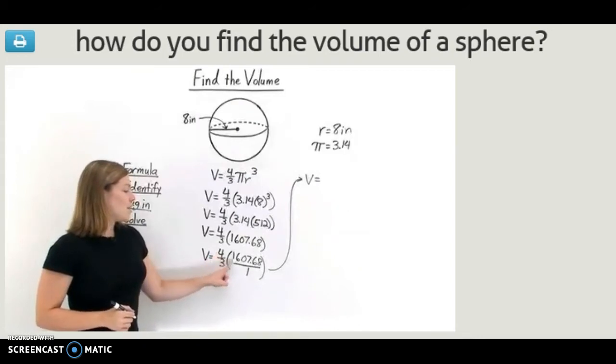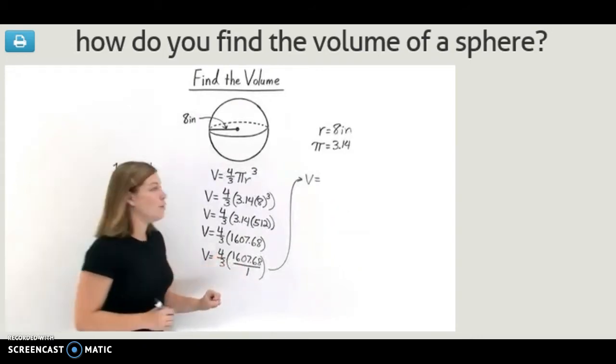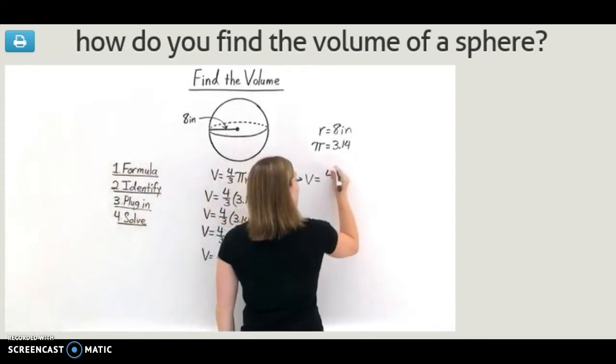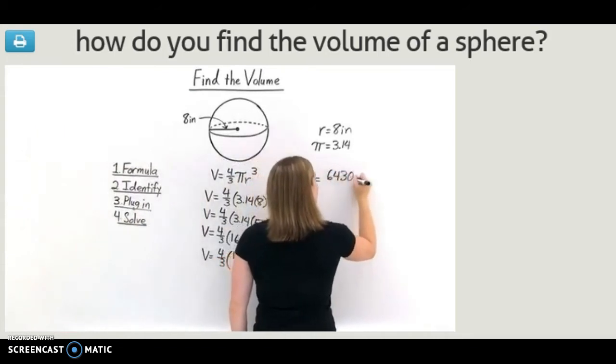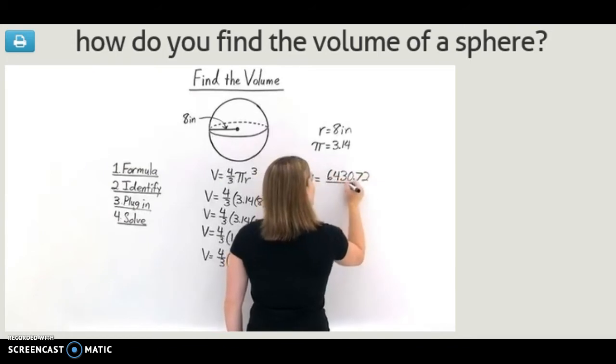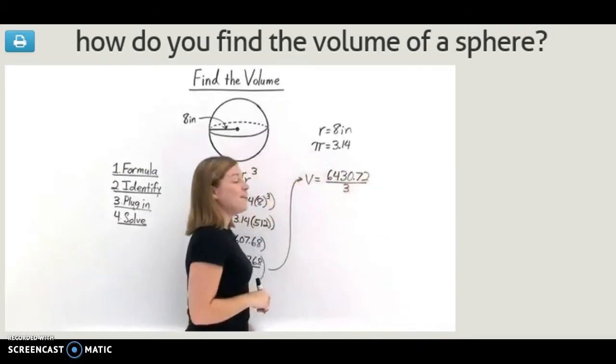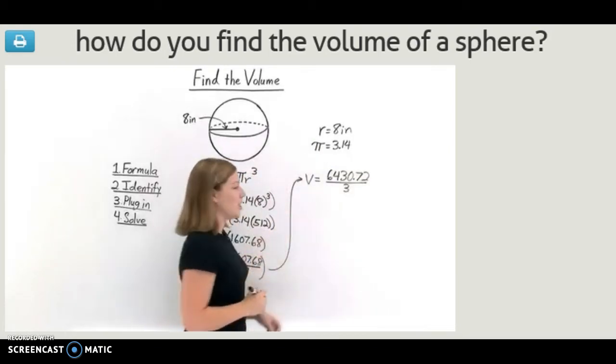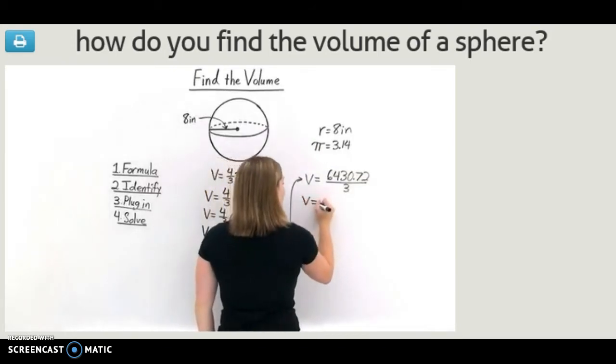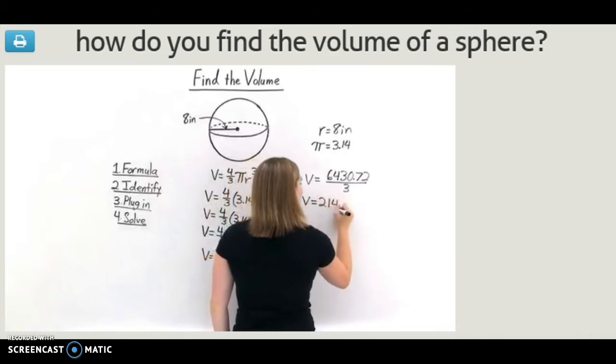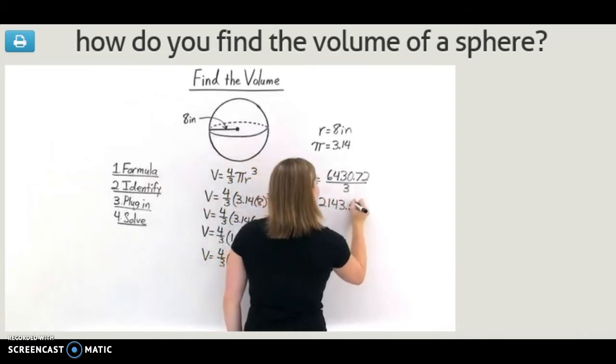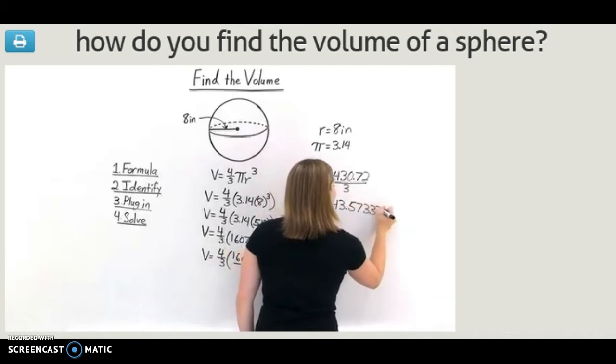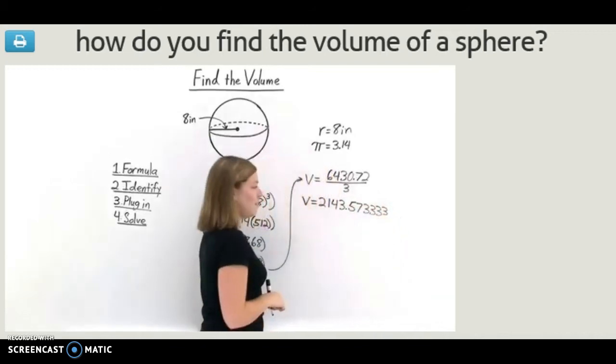So here we take 4 times 1,607.68. When we do, we get 6,430.72. And in the denominator, 3 times 1 is 3. So all we need to do to get the volume now is to perform this division. When we perform this division, we get 2,143.573333. Ew!